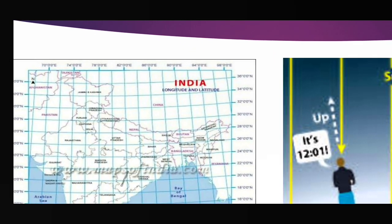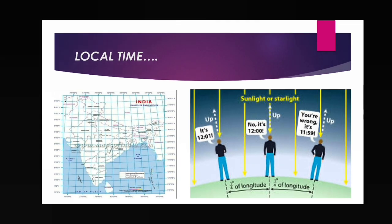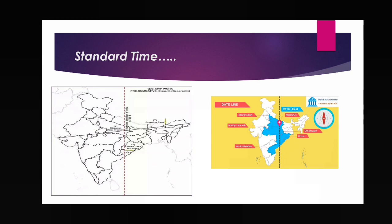The demerit of local time: whenever you travel from one place to another — for example from Gumla to Ranchi — you would have to constantly adjust your watch because each place has a different local time. You cannot make a schedule for railways or flights under this system. To avoid this confusion, we adopt a different type of time called standard time.